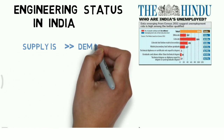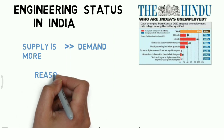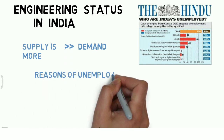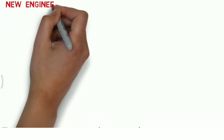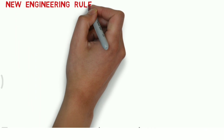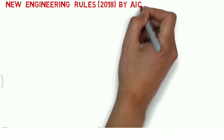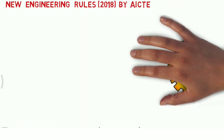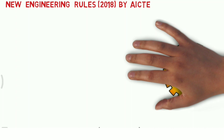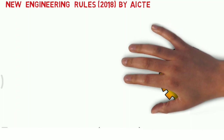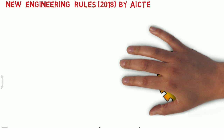The reason behind that is the supply is much more than the demand. The number of engineers graduating each and every year — passing out each and every year — they just don't have enough jobs. For this, the AICTE of India has come up with new engineering rules for the year 2018, and these new rules are certainly going to help us achieve the employment rate for which we have been waiting for years.